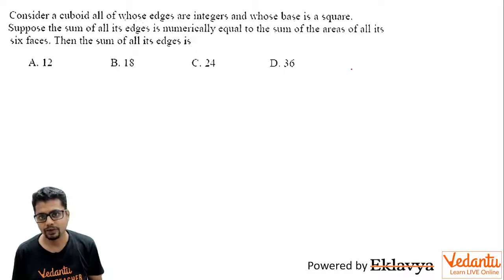So let's say one of the edges is A, another edge of course would be A, because one of the bases is a square, so two edges are A—I mean, length and breadth, you may say A—and height, let's say, is B.